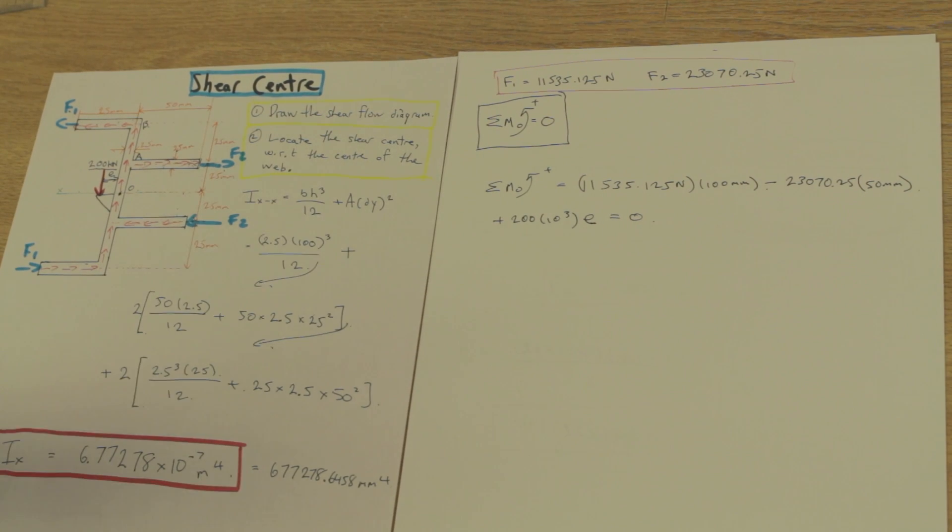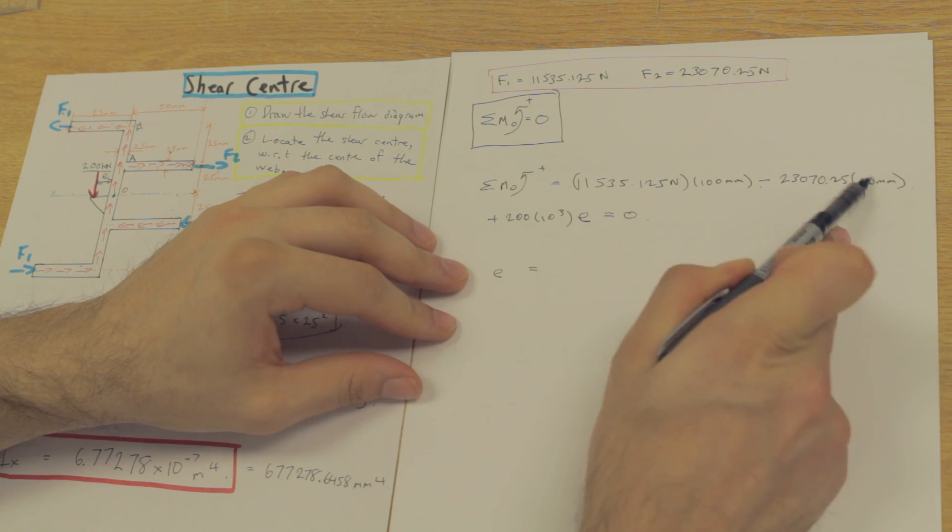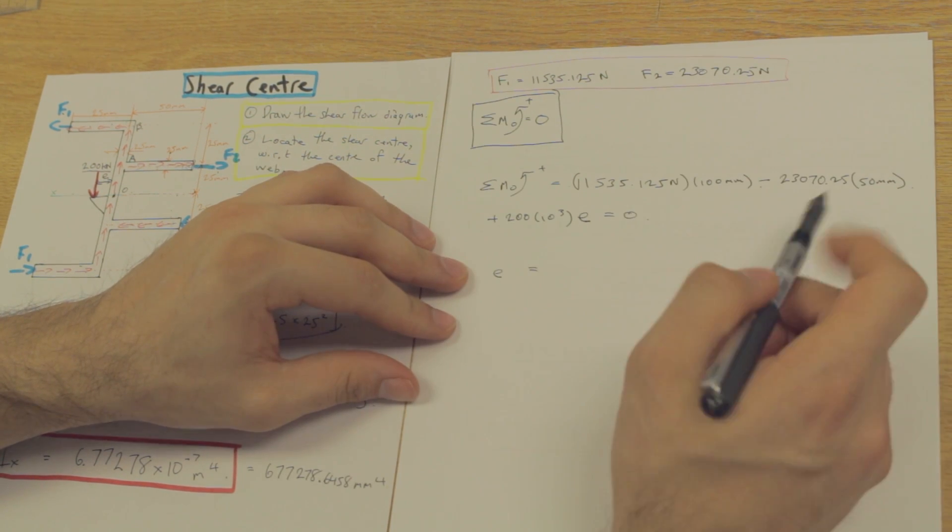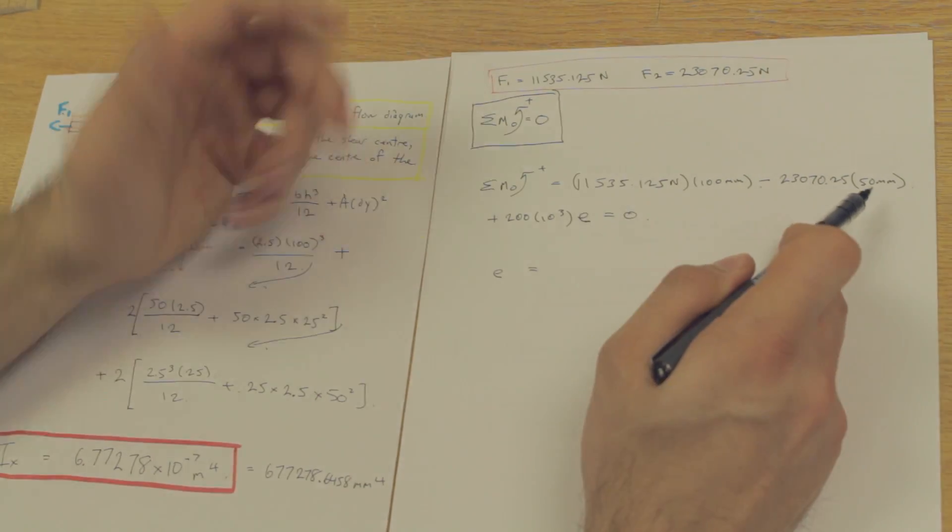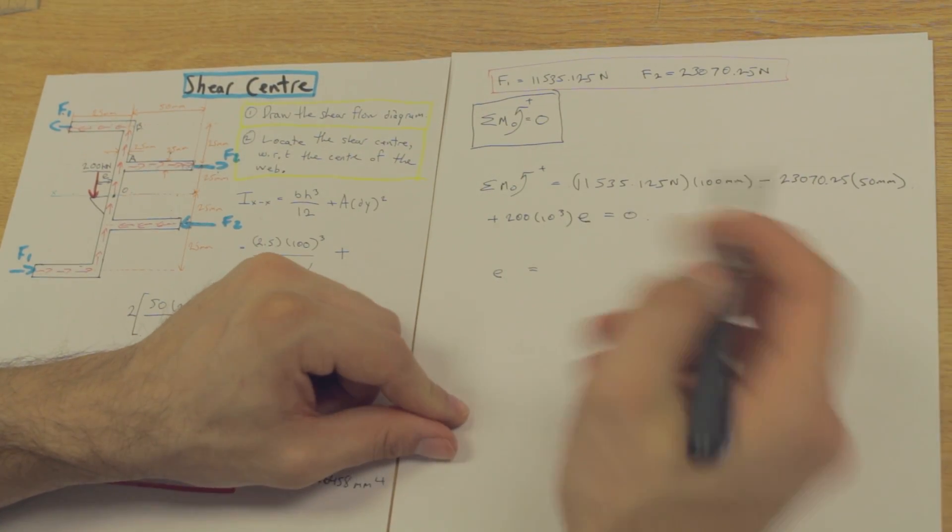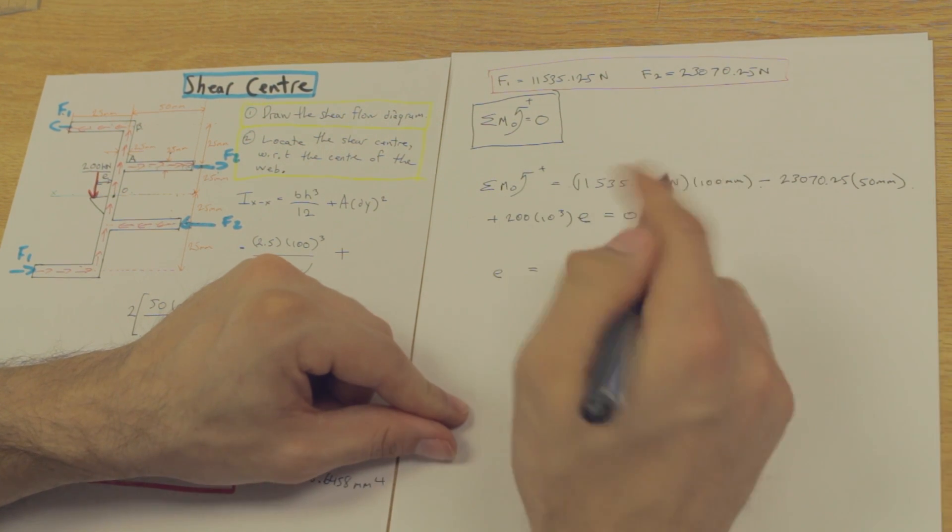Now, all we have to do now is solve for E. If we compute this here, we'll see that we get a very, very, very small number depending on how you round it. Actually, when I rounded here, I ended up getting zero, but if I were to carry more decimals out, I would get something very, very, very small.